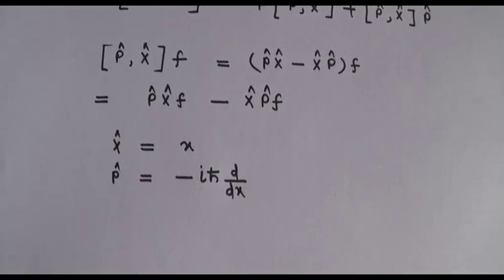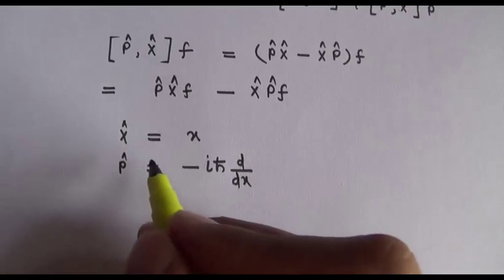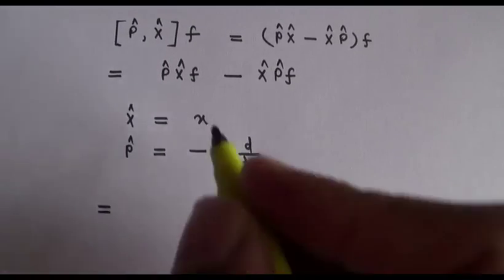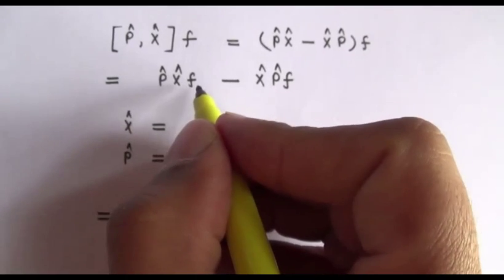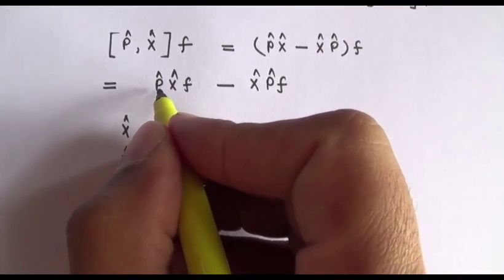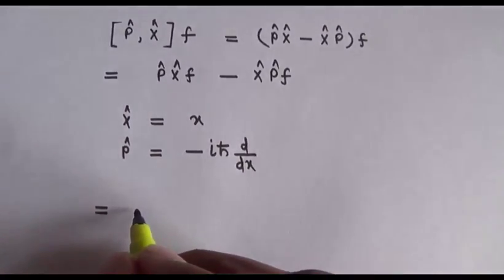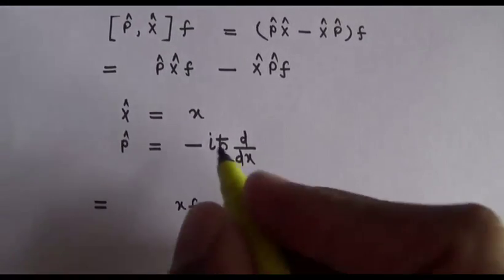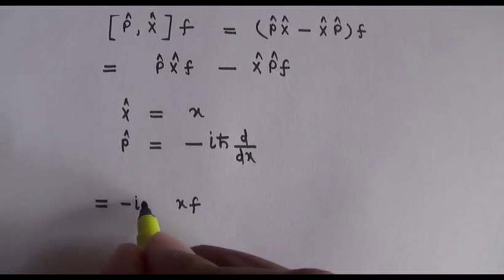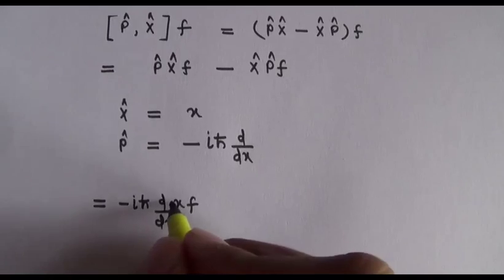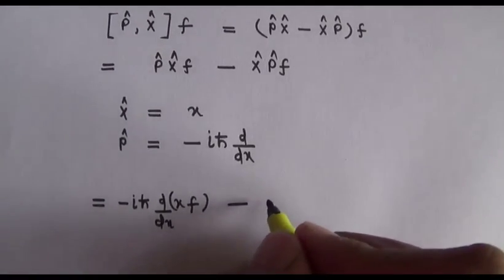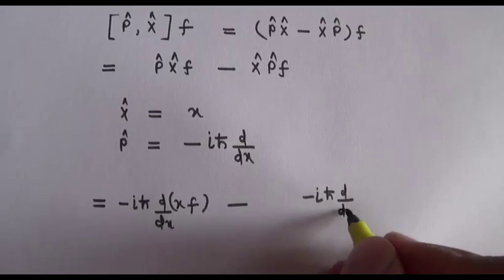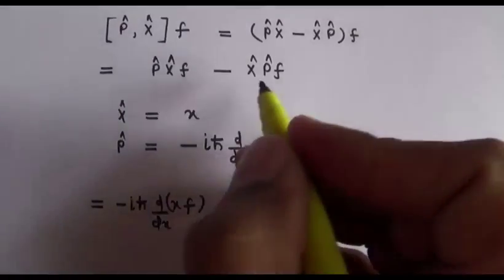p̂ is the momentum operator with value -iℏ d/dx. x̂ is a simple multiplication-type operator; p̂ is a differentiation-type operator. First we operate x̂ on f to get xf, then operate p̂ on the result, giving -iℏ d/dx of (xf). In the second term, we first operate p̂ and then multiply by x.